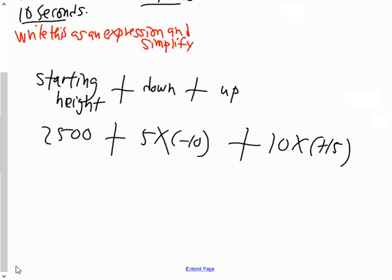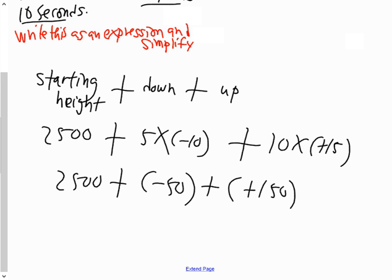So when we simplify this expression with BEDMAS, it's gonna be 2,500 plus negative 50 plus positive 150, just doing my multiplications first because that's what BEDMAS reminds us we have to do.